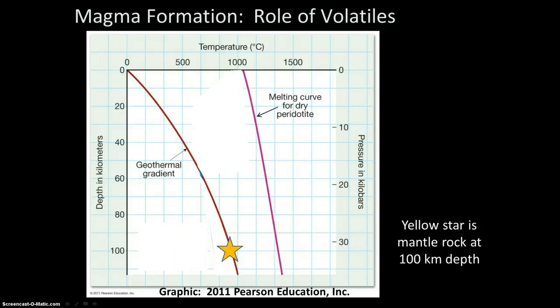The pink curve over to the right is the melting curve for dry peridotite. In other words, we do not have any volatiles involved at this point. At a depth of 100 kilometers beneath the surface, we are not at a high enough temperature to get any melting to take place. If we decided we wanted melting to take place without changing anything else, we would need to increase the temperature acting on that rock, sliding that star over to the right until we hit that melting curve. But that is not what we are going to do.